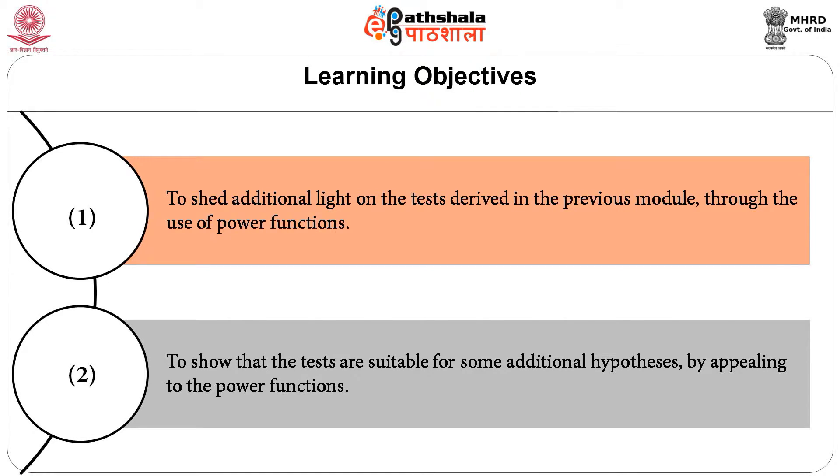This is important because here X lies between 0 and θ, so the range is dependent on the parameter θ. Here, we can find a uniformly most powerful test for testing H₀: θ = θ₀ against the alternative θ ≠ θ₀.